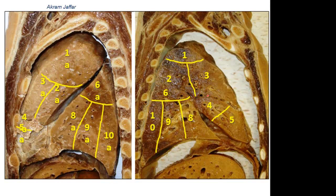The transverse fissure separates the middle from the upper lobe, and the oblique fissure separates the lower lobe from the upper lobe and from the middle lobe. Each of these lobes has segments — the total number of segments is ten. In the right lung there are three segments in the upper lobe and two segments in the middle lobe.